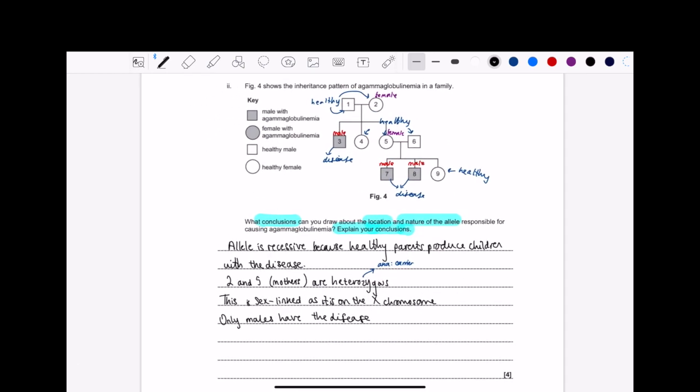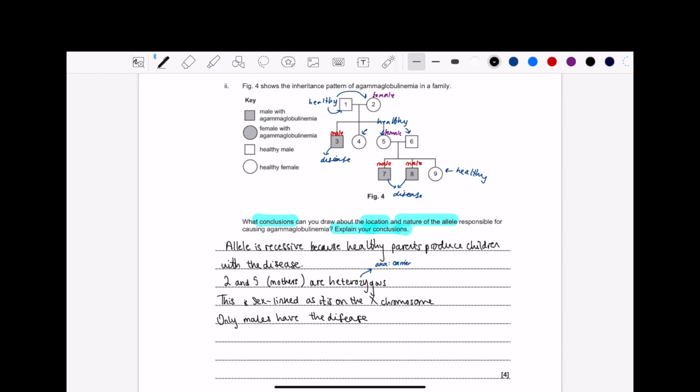Now, this question here, part two, I love this. This is one of the best questions that OCR has made, hands down. It's so good. And let me explain why. In this question here, it tells you to write down conclusions about the location and the nature of the allele responsible for causing that disease, then explain your conclusions.